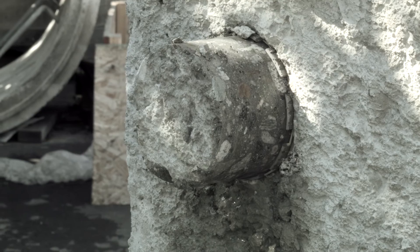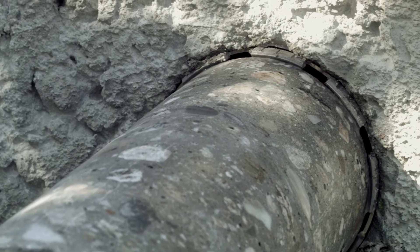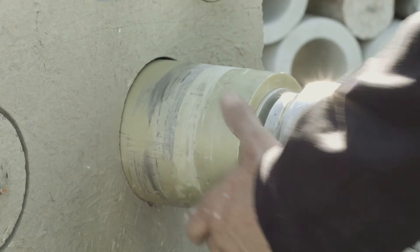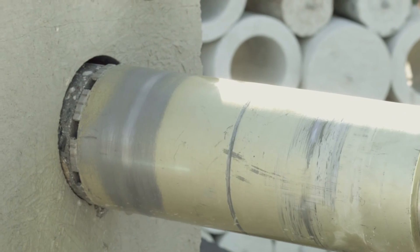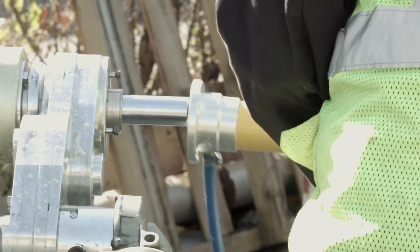Eject the concrete core from inside the bit by reversing the feed. Pull the rig and the core out of the hole until only the bit remains. Now dismantle the CoreEasy.